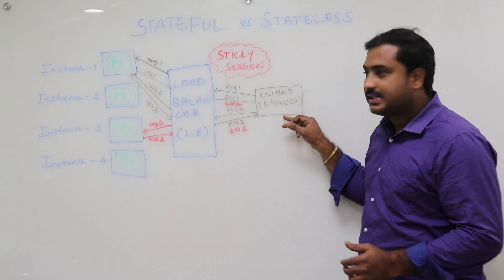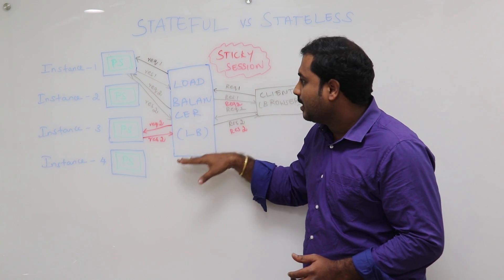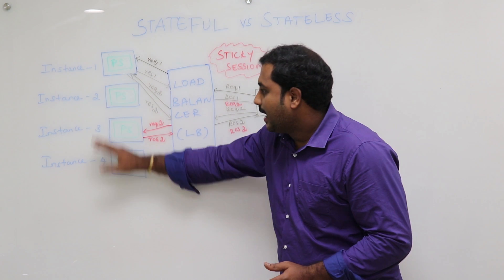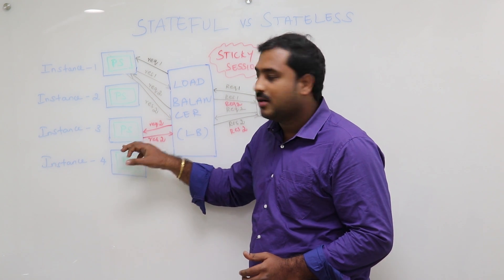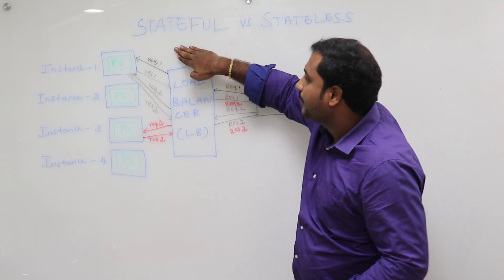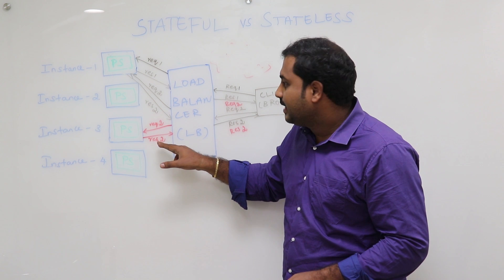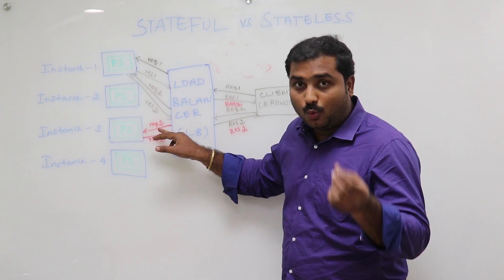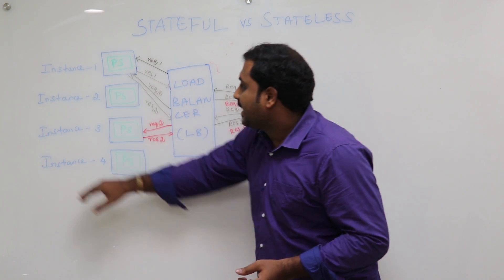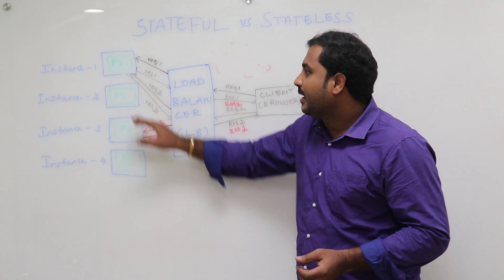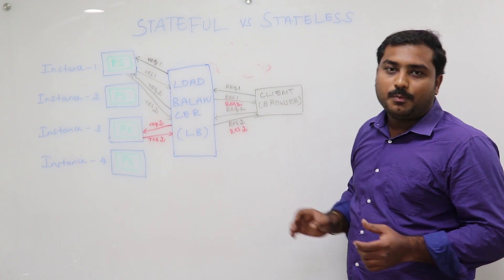Now the client sends another request to the load balancer. This time, the load balancer checks which instances are free, and the second request goes to Instance 3 — because there is no sticky session being kept and no JSessionID is created. Instance 3 handles the request and returns the response properly to the client. So in this case, Instance 2, Instance 3, Instance 4 — all available instances — are being used properly through auto scaling, thanks to the stateless approach.